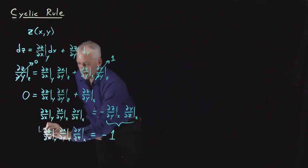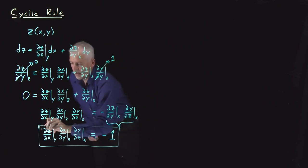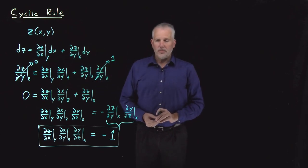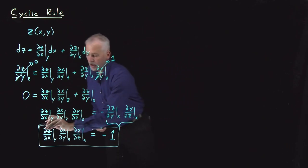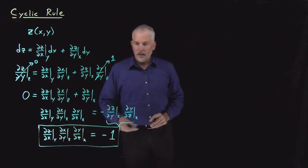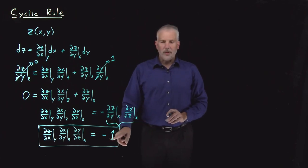So that's our final result. I'll put that one in a box. That is the identity we call the cyclic rule, sometimes also called the triple product rule. It's obvious why it's called the triple product rule. It's because it's a product of three partial derivatives. This particular product of three partial derivatives gives me a minus one.